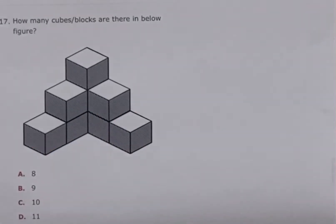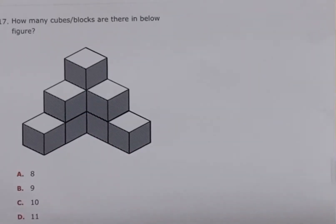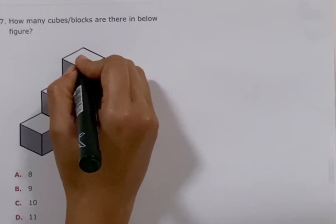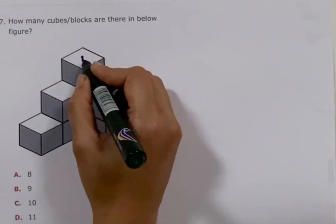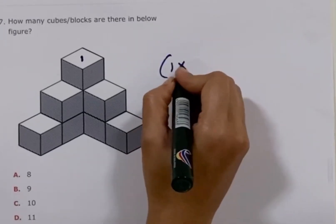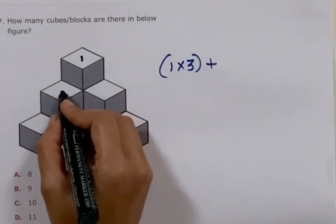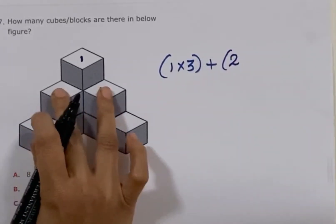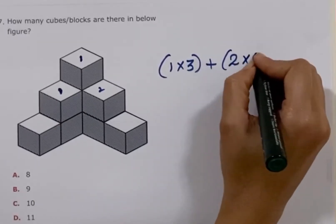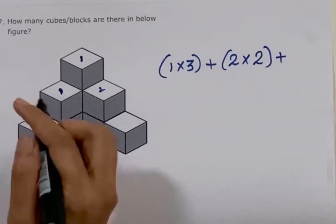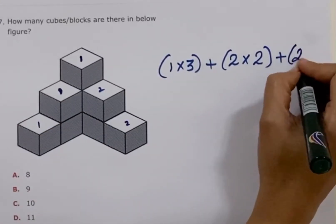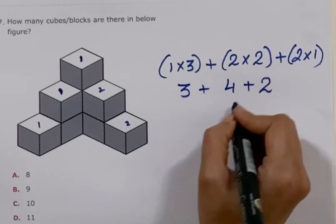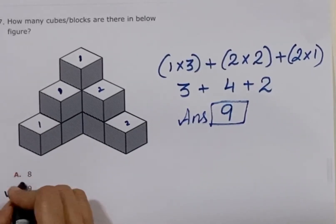Next is a question which is very easy to find the total cubes in the figure. Here, this column has 1, 2, 3 — so 1 into 3. These 2 are similar: 2 columns with 1, 2 cubes — so 2 into 2. Plus there are 2 with only 1 cube. The summation gives 9. So the answer is 9 cubes in this figure.